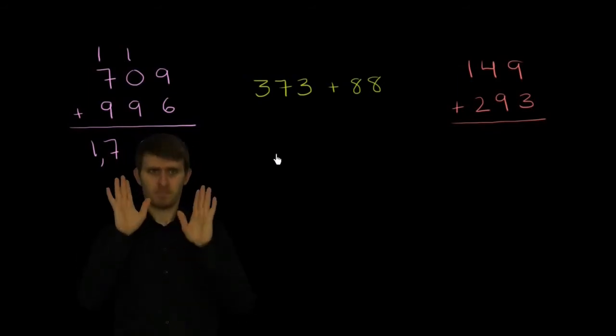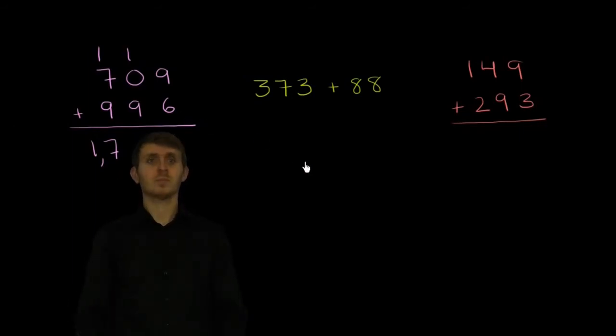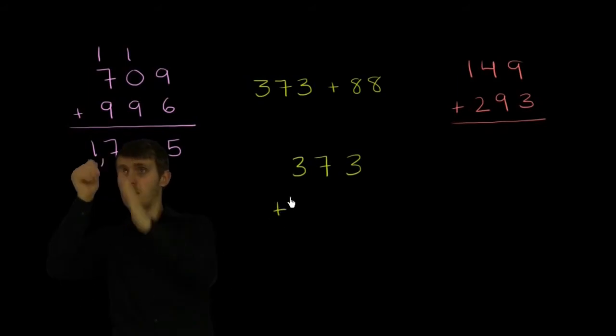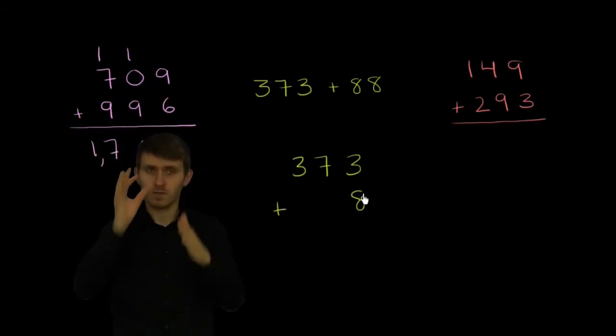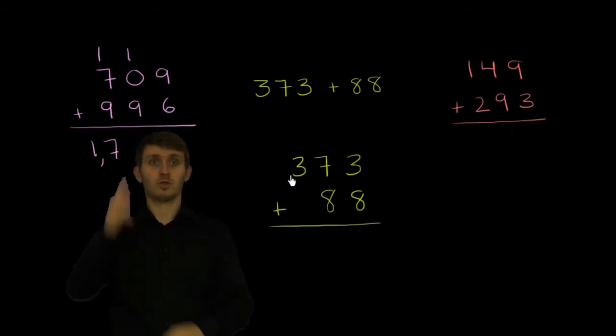So this one we can rewrite as 373 plus, we want to write the ones place under the ones place and the tens place under the tens place, so that we're adding the appropriate place values.